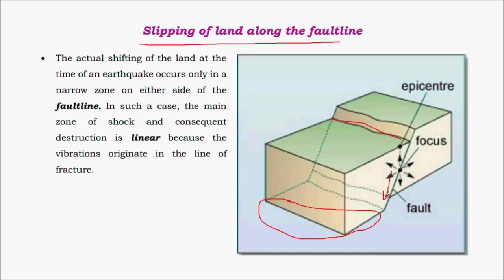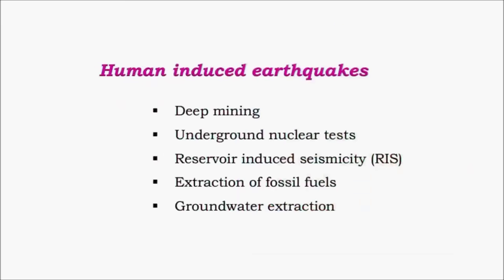Sometimes fault-line earthquakes can be of very high intensity causing huge destruction. Human-induced earthquakes are mainly due to deep mining, underground nuclear tests, reservoir-induced seismicity, extraction of fossil fuels causing voids in the earth's crust, and extensive groundwater extraction. Reservoir-induced seismicity is associated with the building of reservoirs, as there is a change in isostatic equilibrium. Most human-induced earthquakes are less significant compared to natural ones.